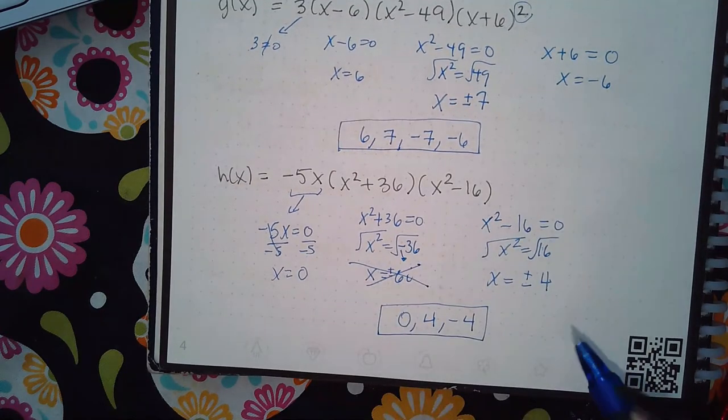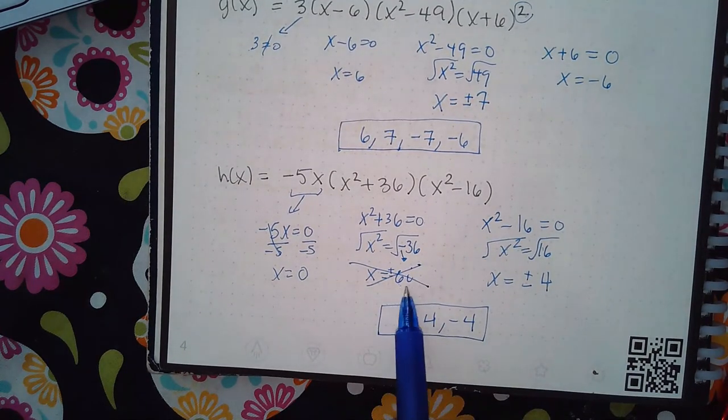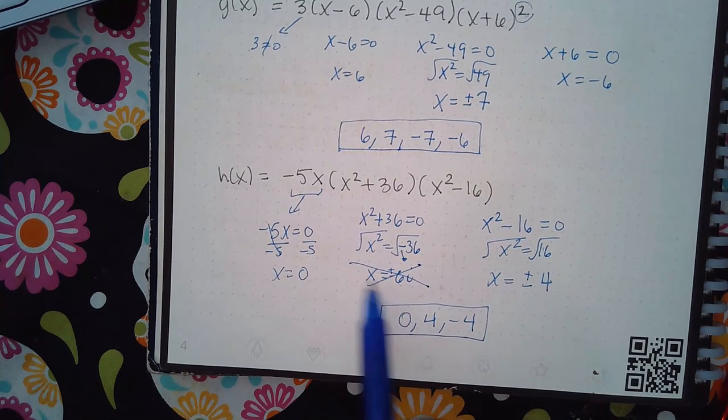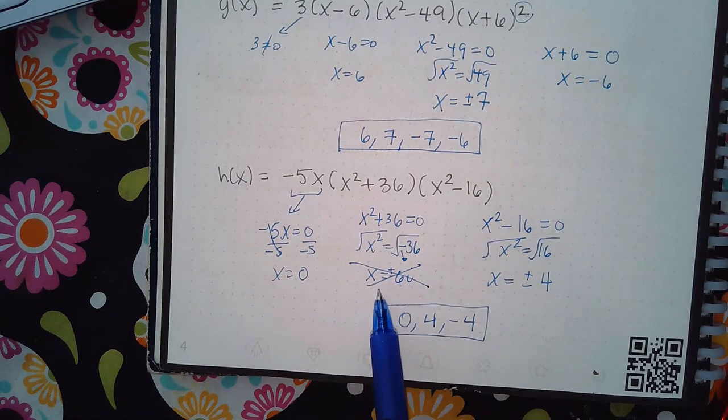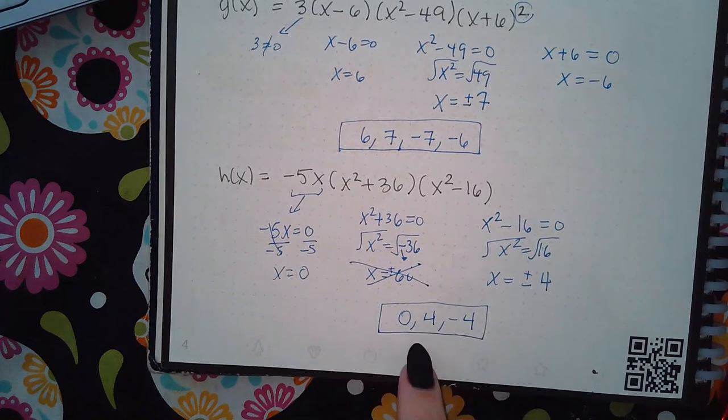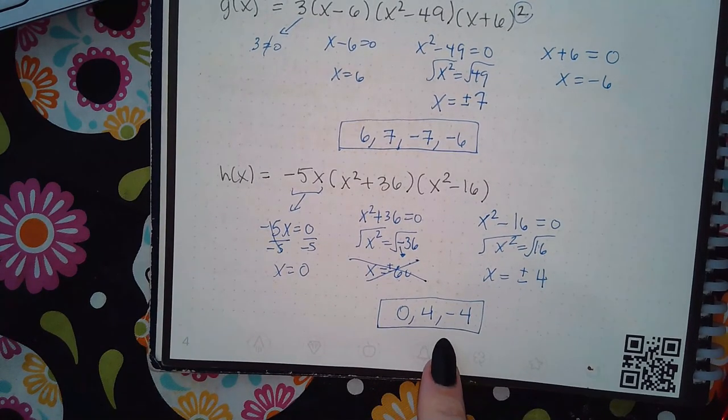Now I actually have five zeros, but two of them are imaginary, right? We have positive 6i and negative 6i. So there's two more zeros to this polynomial, it's just they're not real. Okay, and the problem is only asking me in this topic for real zeros.